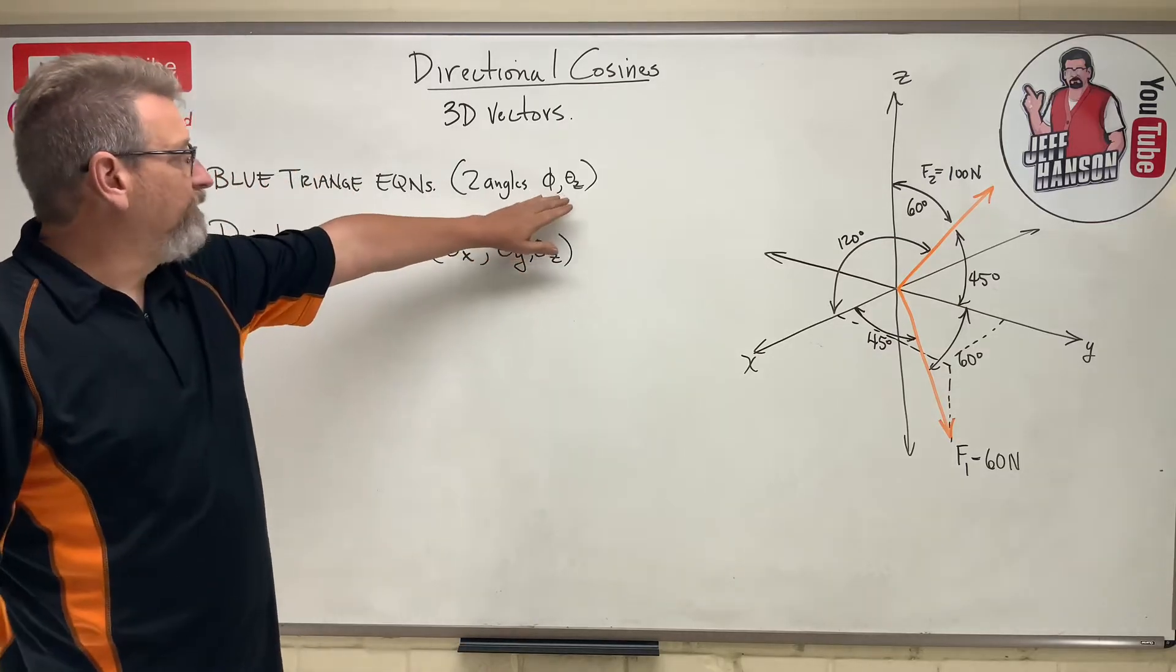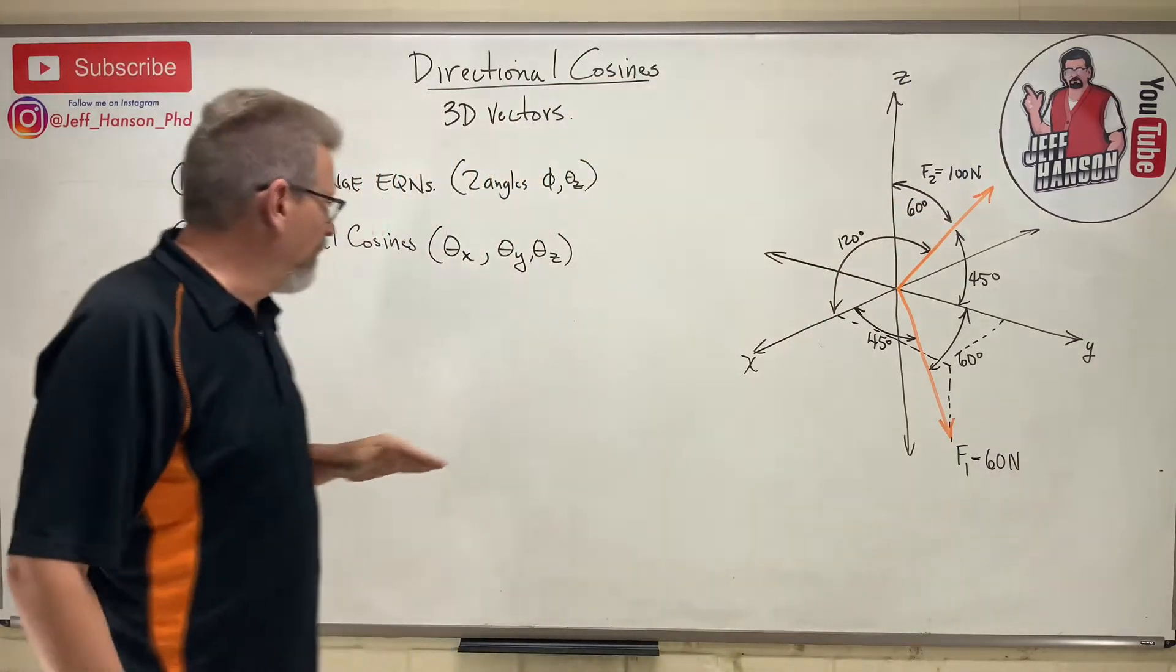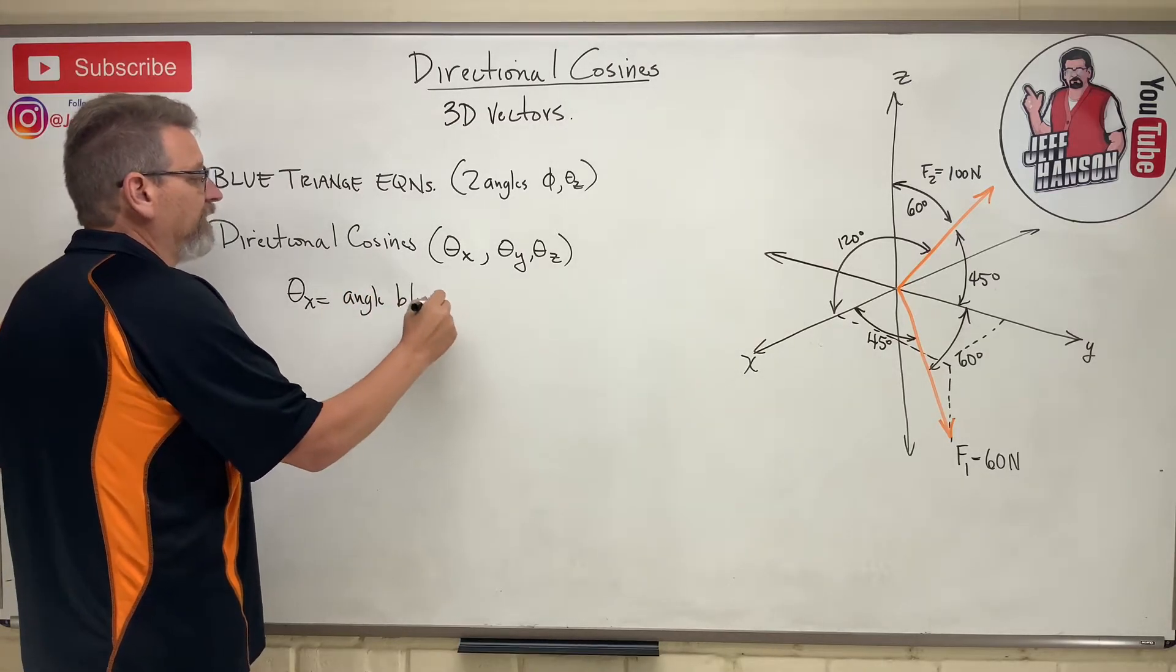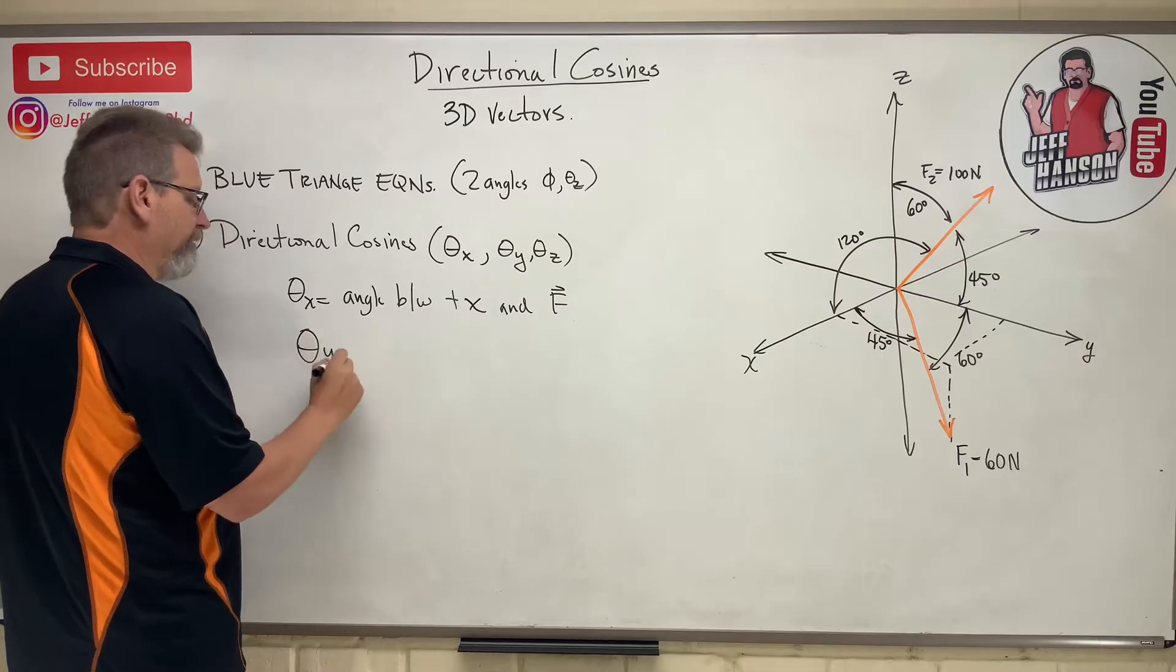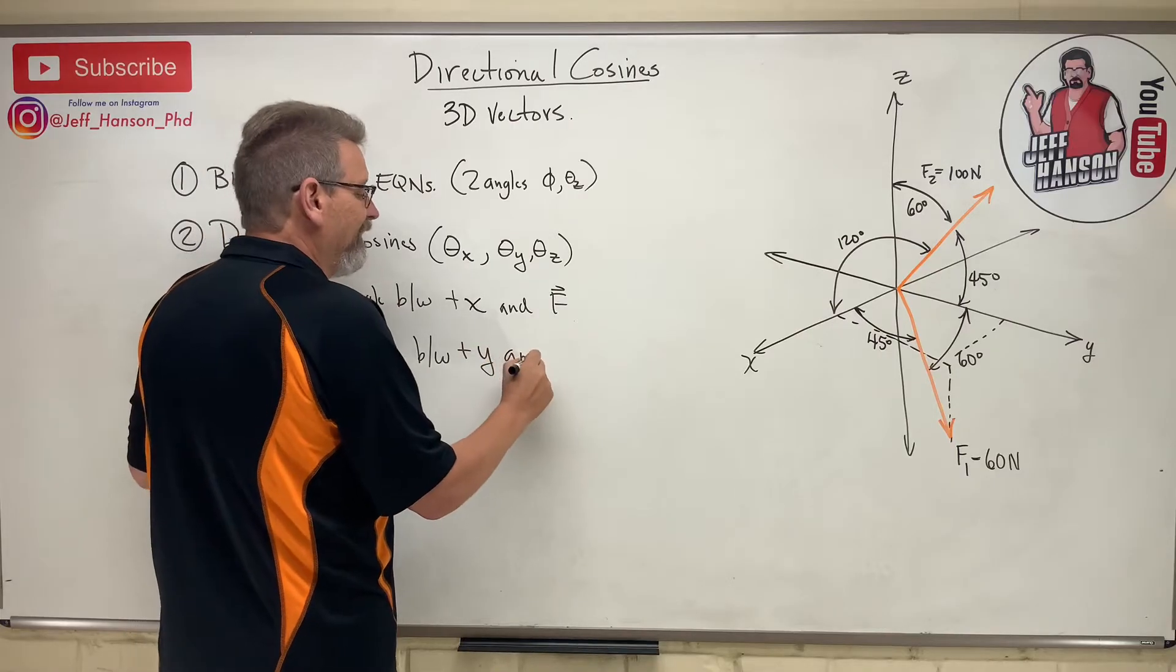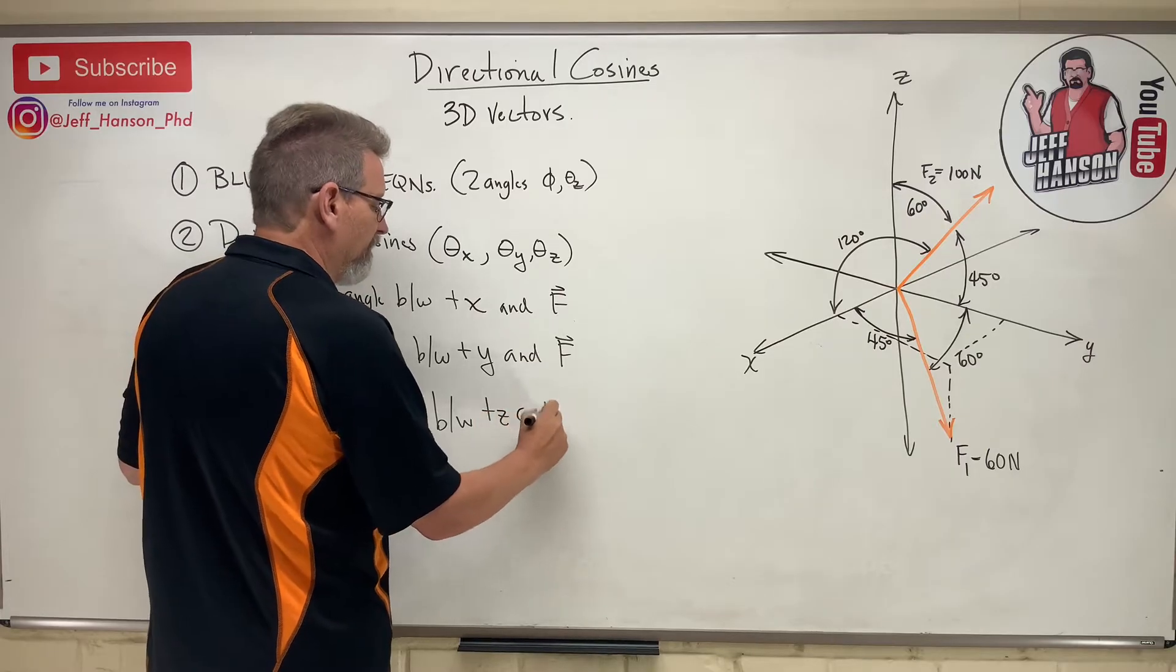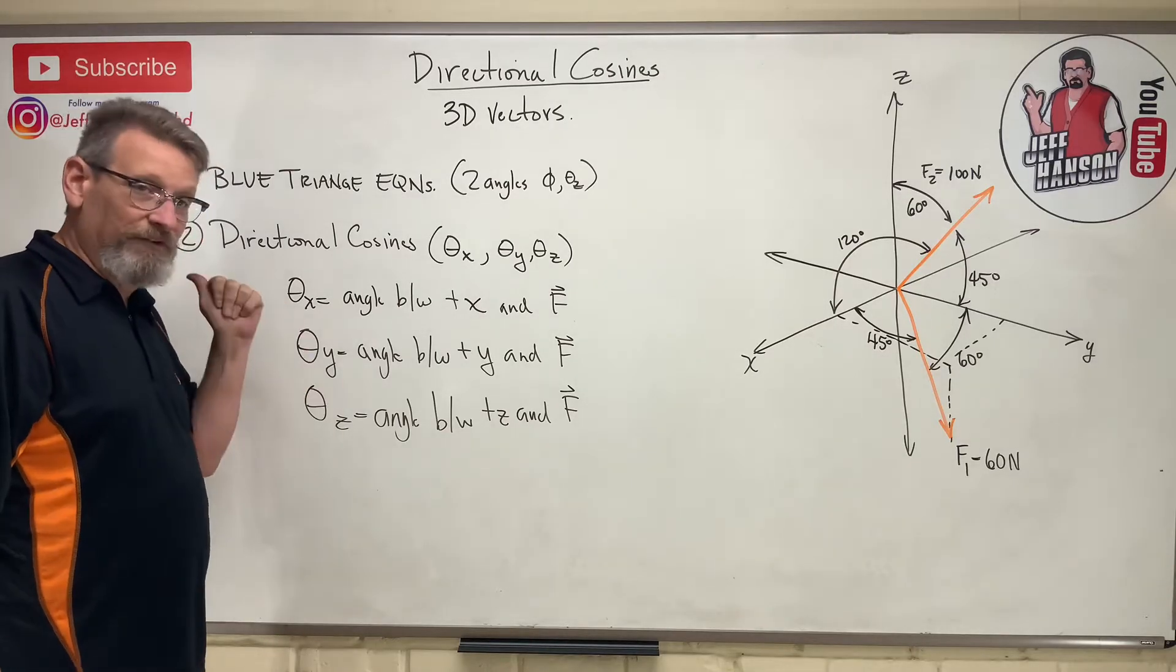Just like up here, theta z was the angle between the positive z and the vector f. This is no different. So theta x is the angle between positive x and vector f. Theta y angle between positive y and vector f. And theta z is the angle between positive z and vector f. As a matter of fact, this theta z is exactly the same theta z as it was in the blue triangle equations.